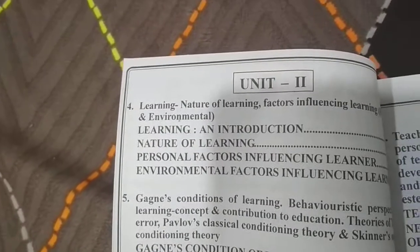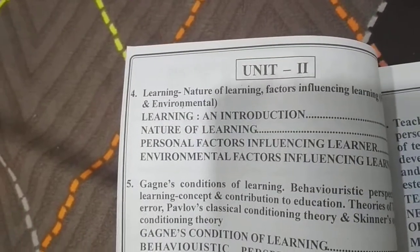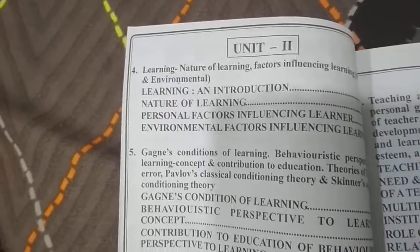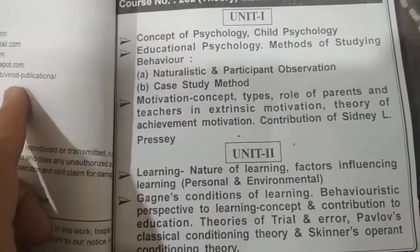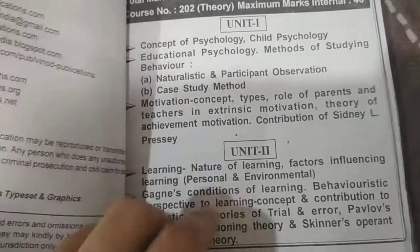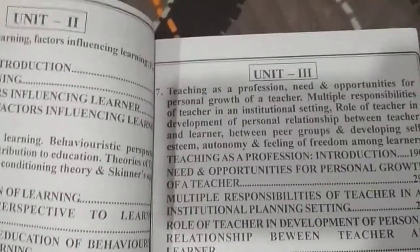After that, Unit 2 — the topic was Learning and Introduction, Nature of Learning, Personal Factors Influencing Learner. And in the syllabus, it's the same: Learning, Nature of Learning, Factors of Learning. So you can check that everything which was there in the syllabus is there in the contents also. You can check Unit 3 also — Teaching as a Profession — and in the syllabus also, Teaching as a Profession.